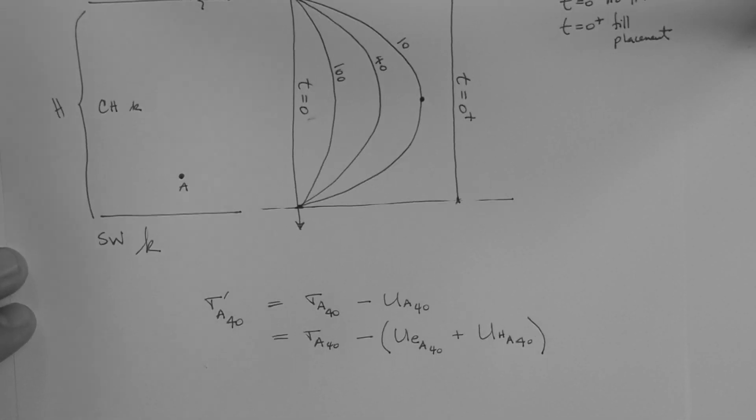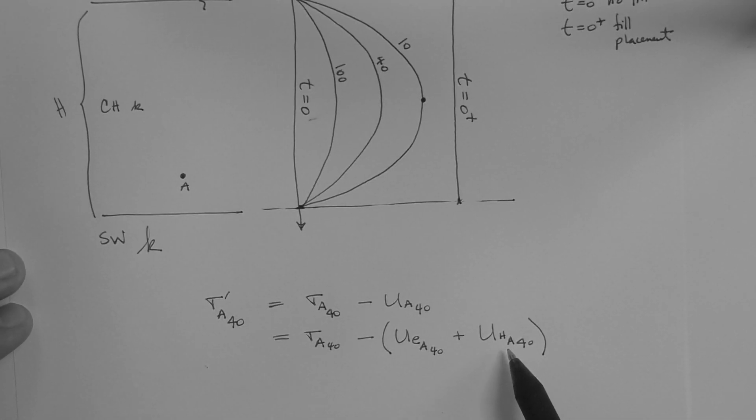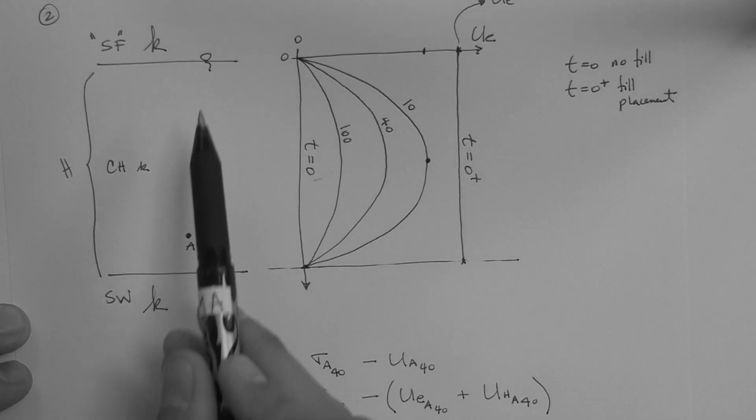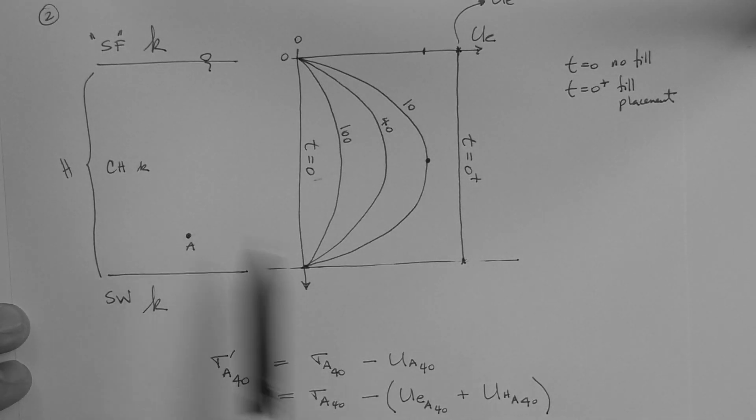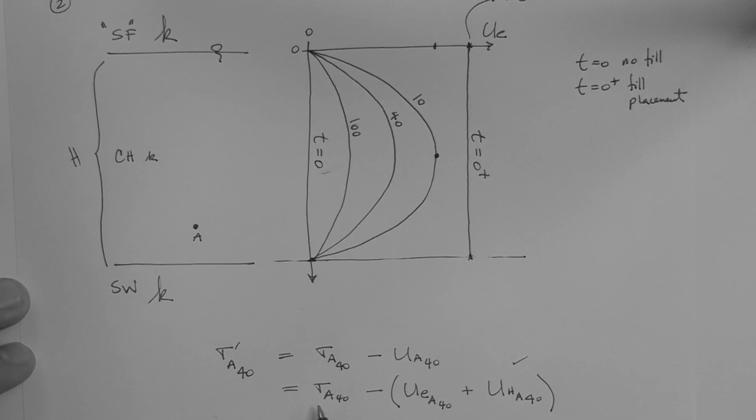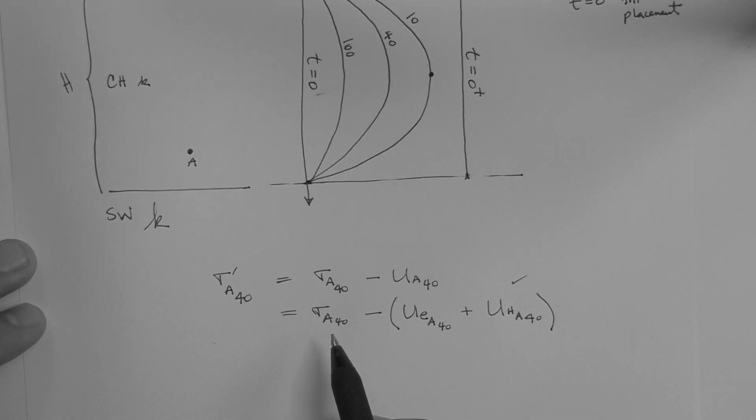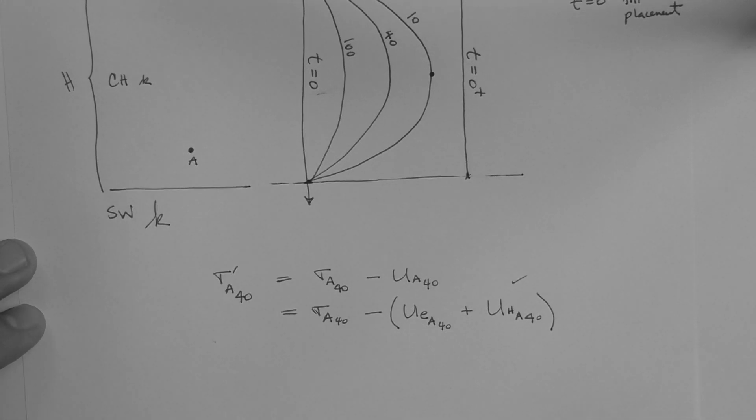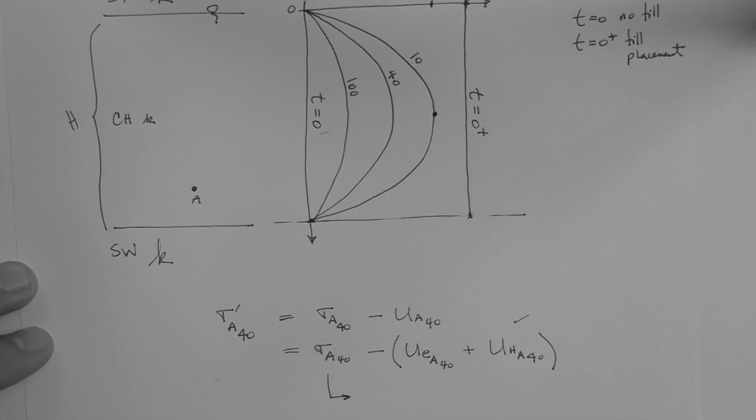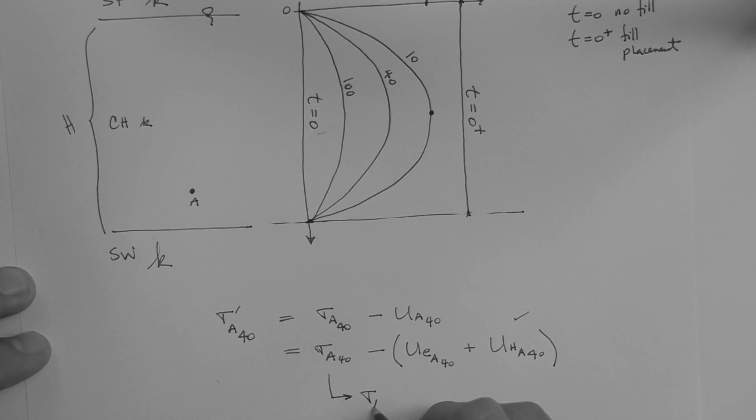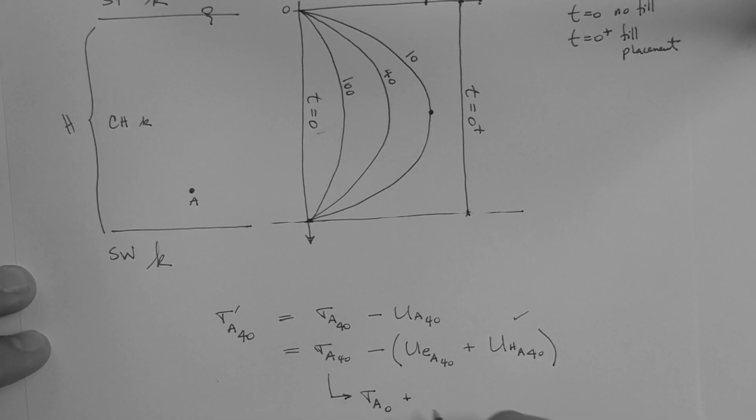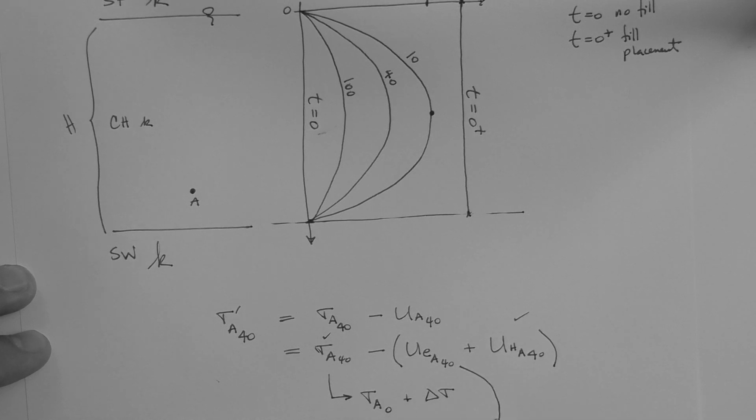Do we have this? Yes, we know where the point is, and we know where the water table is. So, we have that. Do we have this? The total stress at time equals 40 days at that point. Yes, we do. The total stress is simply the total stress at that point at time equals zero, plus the load. So, we have that. The question is, how do we get this?